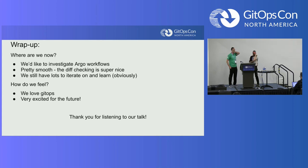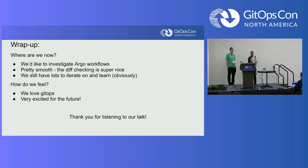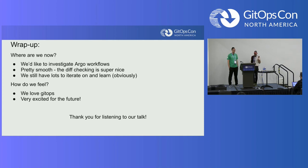To wrap up: a lot of our delivery stuff is working really nicely with Argo CD and GitOps. We'd like to start incorporating Argo Workflows — CI was the bigger beast, so we got started with CD and delivery first. The diff checking on moving to Argo CD is really nice. We still have lots to iterate on, but overall we feel good. We love GitOps. The company has been supportive, people have seen value in it, and we're excited for the future.